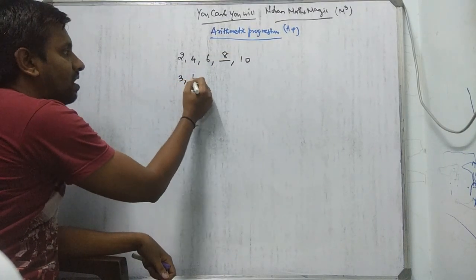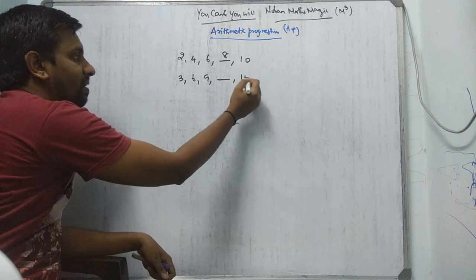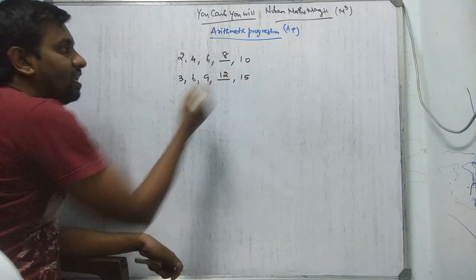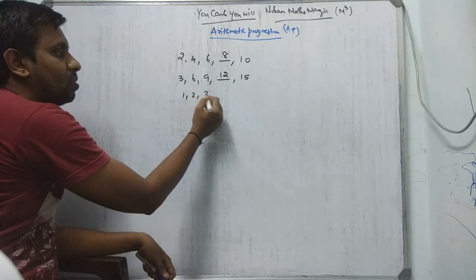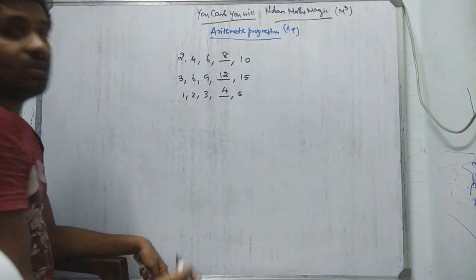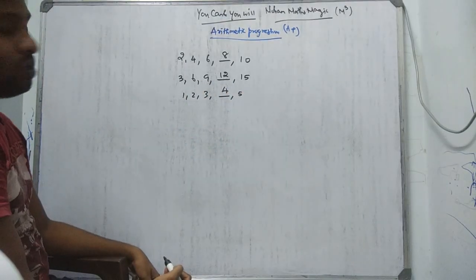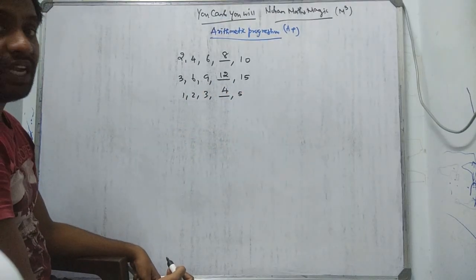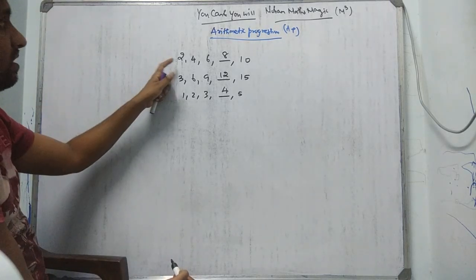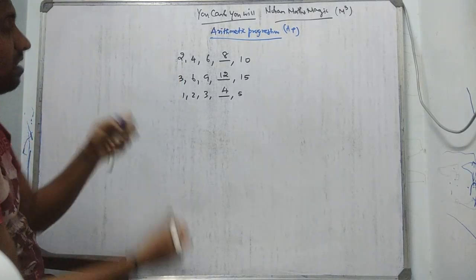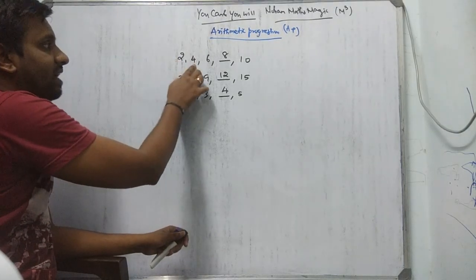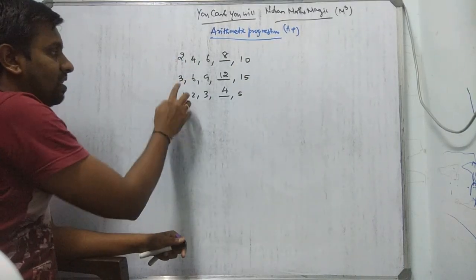Similarly, 3, 6, 9, dash, 15 — surely you'll be telling that 12. Similarly, 1, 2, 3, etc., 5 — the next term will be 4. You'll be checking the difference between the first two terms. So first of all, what are the numbers? First term, second term, third term, fourth term, fifth term.